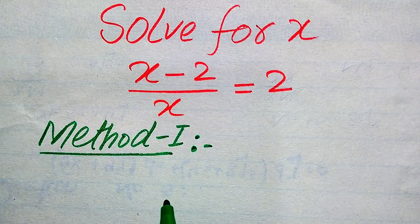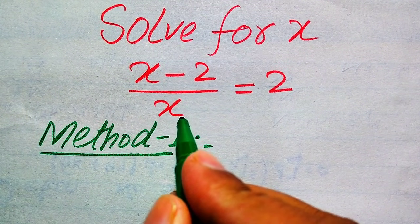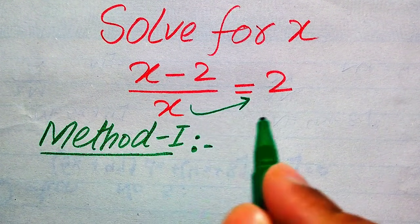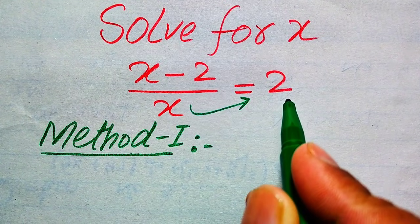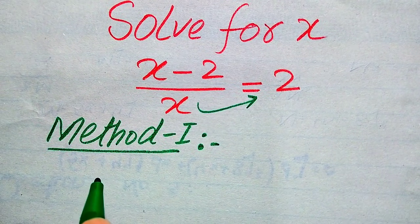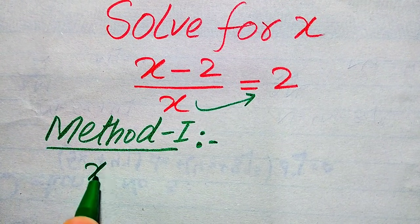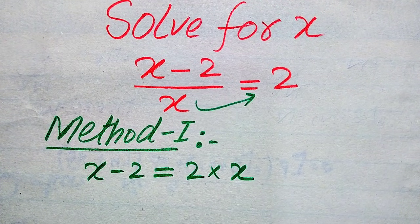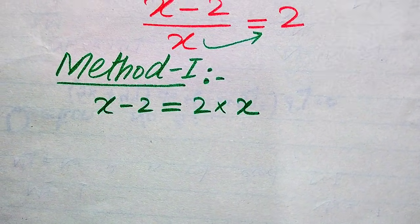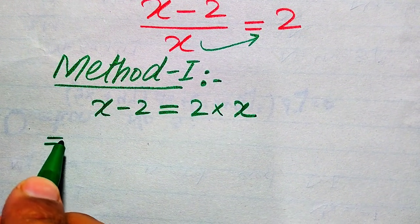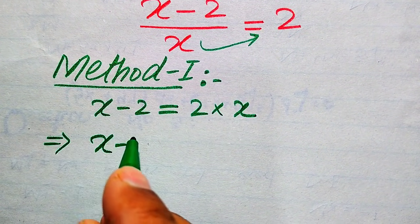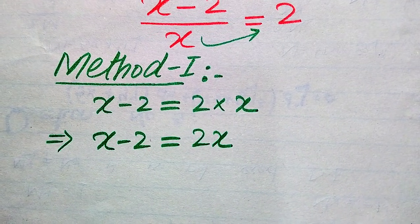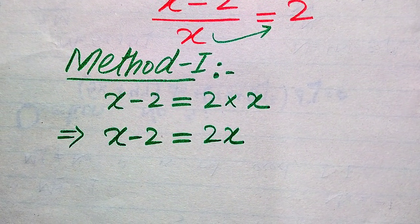In the first method, we need to move the X from the left-hand side to the right-hand side. This X is dividing the left-hand side; when we move it to the right-hand side it multiplies, so it is written as X minus 2 equals 2 multiplied by X, which gives us X minus 2 equals 2X.